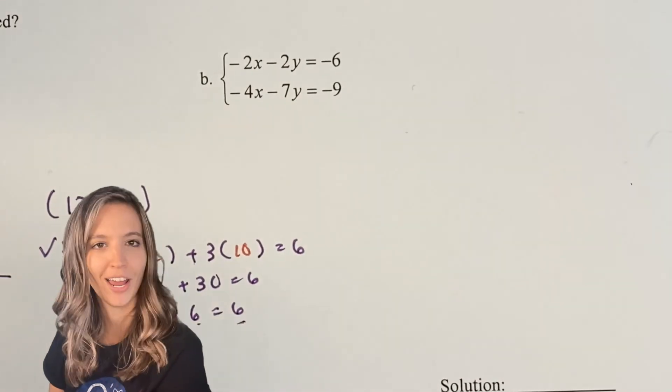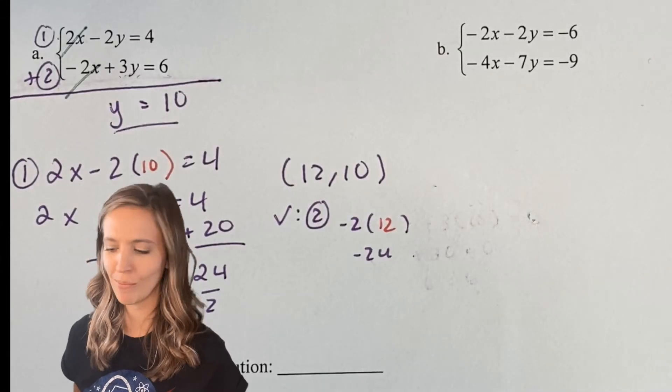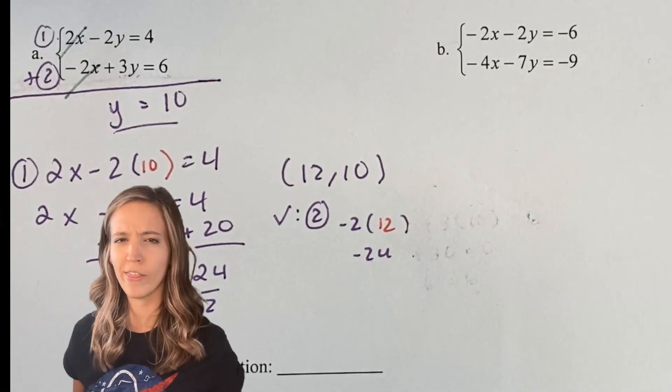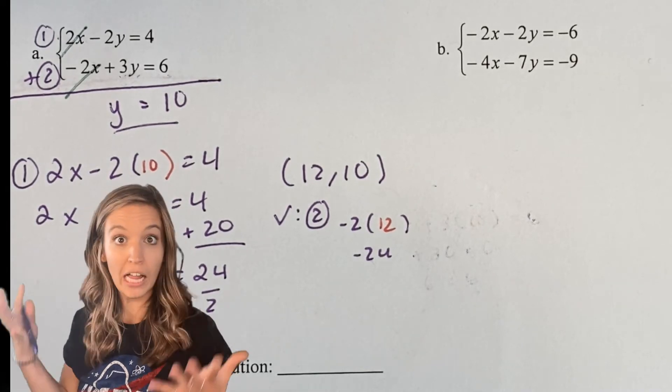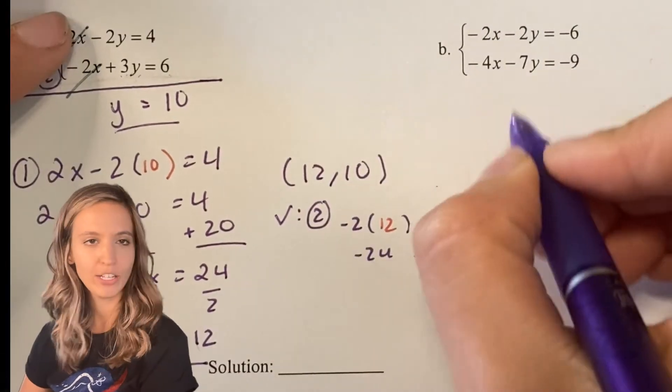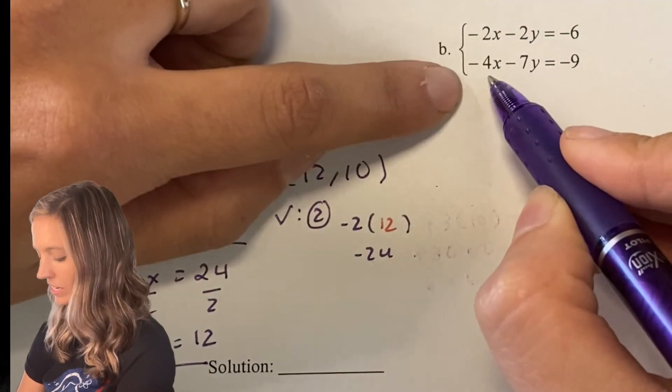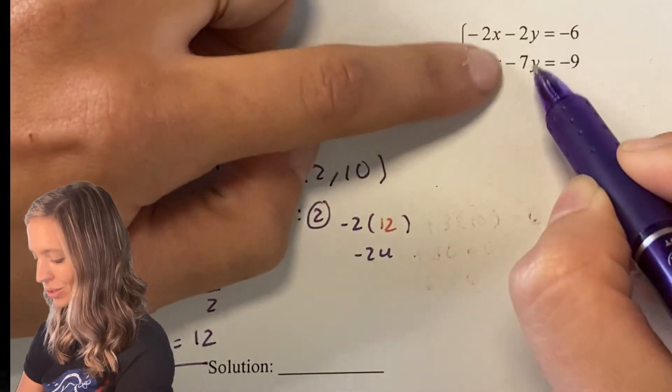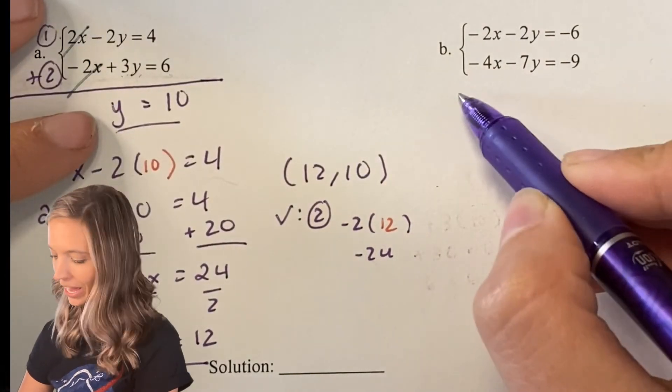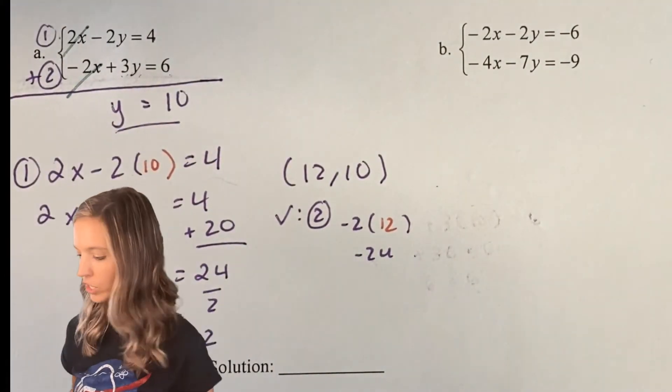Let's try elimination again on this next one. As I look at this next system, I don't see an x or y with a coefficient of 1 that would be easy to isolate. So I'm going to stick with elimination. If I were to add straight down right now, would any of my variables be eliminated? Well, -2 + -4, that's not going to be eliminated. -2 + -7, that's not either.